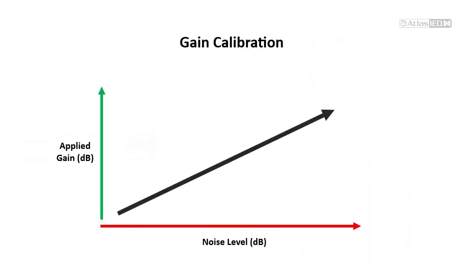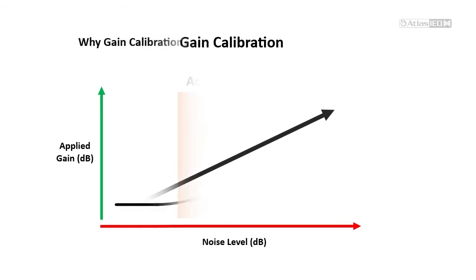Even without sensor calibration, ANC needs to know how to respond to changing noise levels. We'll refer to this process as gain calibration. At first, the solution seems simple—increase gain proportional to the ambient noise levels—but the problem is more subtle than it seems.